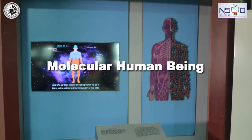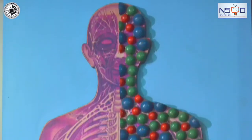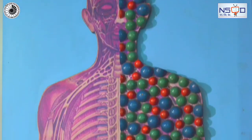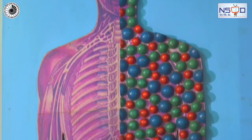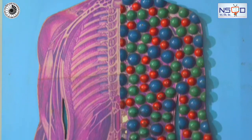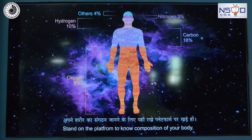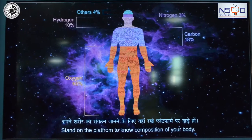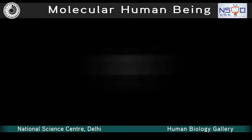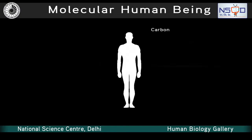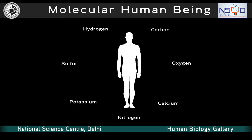Molecular Human Being: Elements are all around us and are part of us. The composition of the entire universe, including living organisms, are rooted in these elements. Hydrogen is the most abundant element in the universe.